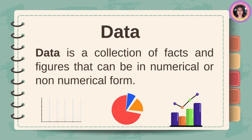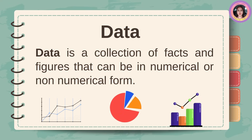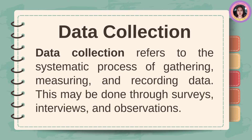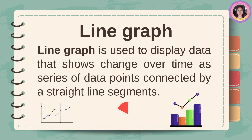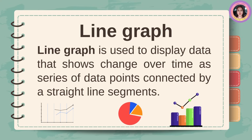Data is a collection of facts and figures that can be in numerical or non-numerical form. Data collection refers to the systematic process of gathering, measuring, and recording data — this may be done through surveys, interviews, and observations. A table is an arrangement of data, typically in rows and columns, that summarizes it in an easy-to-understand format. A line graph is used to display data that shows change over time — a series of data points connected by straight line segments.